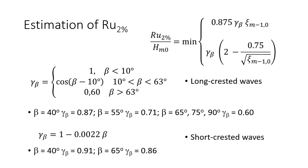So we end up with this formula for the dimensionless run-up, depending on the surf similarity parameter and on the reduction factor due to the incidence angle. The values here show, for the same incidence angle, the reduction factor for short-crested waves being larger than the reduction factor for long-crested waves.